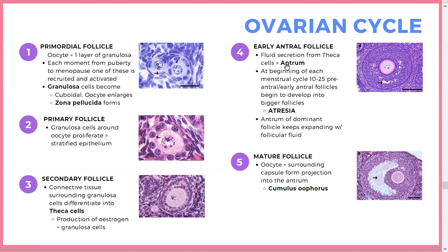The theca cells produce fluid, forming the antrum — a fluid-filled space visible on histology. At the beginning of a cycle, 10 to 25 pre-antral follicles are present; only one will be selected. The process of elimination is atresia, not normal apoptosis. The dominant follicle wins, and its antrum keeps expanding until it bursts — that is ovulation.